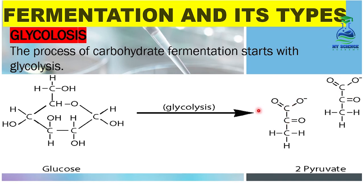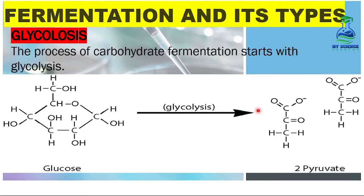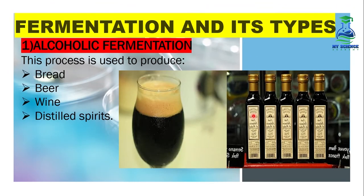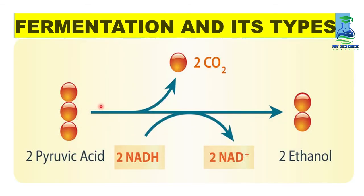In any type of fermentation, the first step starts with glycolysis, and this glycolysis process is similar to respiration because the glucose molecule breaks down in the absence of oxygen. Alcoholic fermentation — this process is used to produce bread, beer, wine, and distilled spirits. In this diagram, the alcoholic fermentation can be observed. One glucose molecule is converted into 2 pyruvic acid molecules.